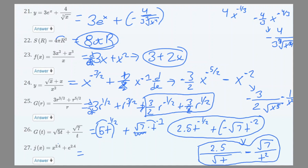Number 27: x^2.4 + e^2.4. For x we move 2.4 to the front giving 2.4x^1.4. e^2.4 is a constant since e is a constant, so its derivative is 0. Final answer: 2.4x^1.4.